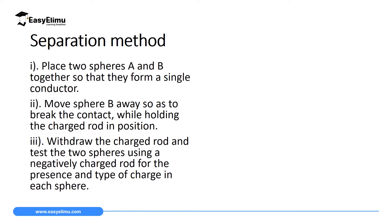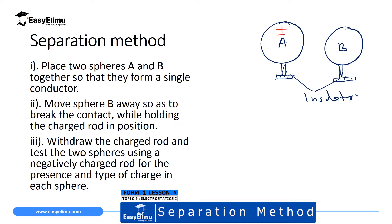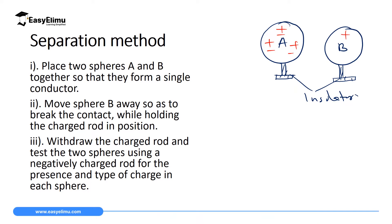To charge two bodies using separation method, one will acquire positive charges and the other one will acquire negative charges. You need two bodies — ball A and ball B — and you support them using an insulating material. This insulating material prevents electrons from moving from the ground to the balls or from the balls to the ground. Both balls are electrically neutral, meaning the number of protons is equal to the number of electrons in each ball.